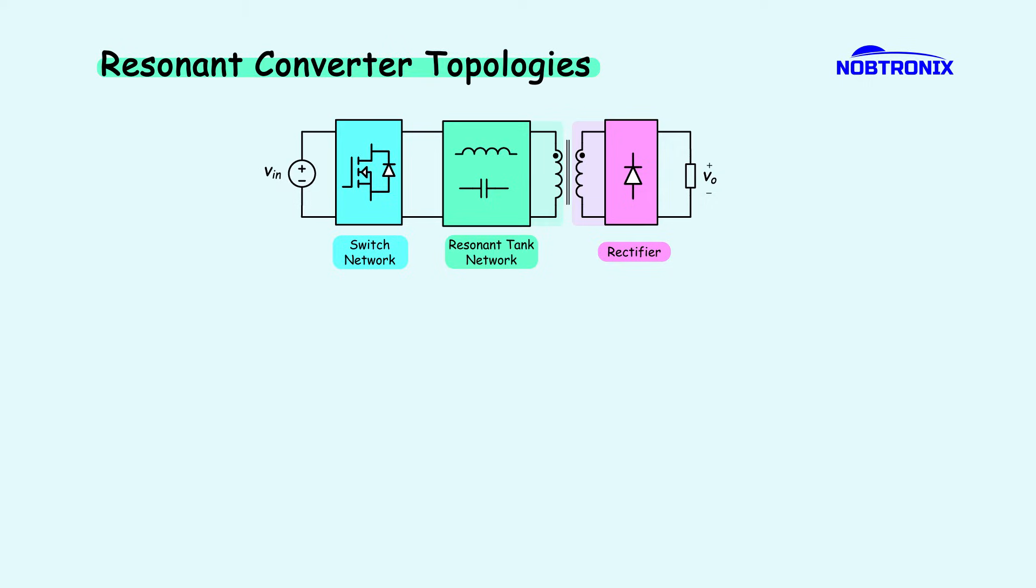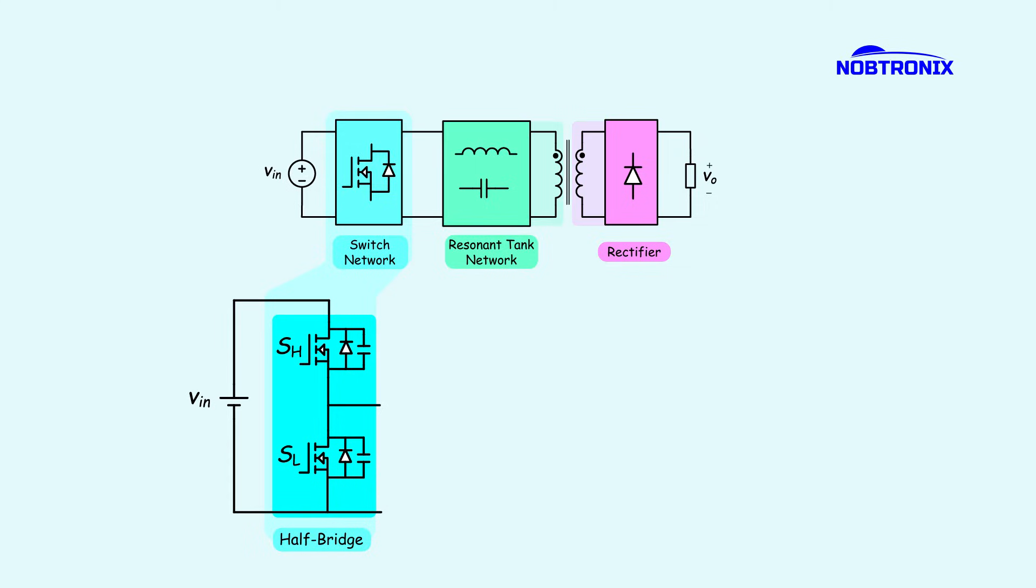Now, by combining these blocks, a resonant converter can be created. For the switch network, a half-bridge configuration is chosen, consisting of two switching devices that alternately turn on and off to drive the circuit.